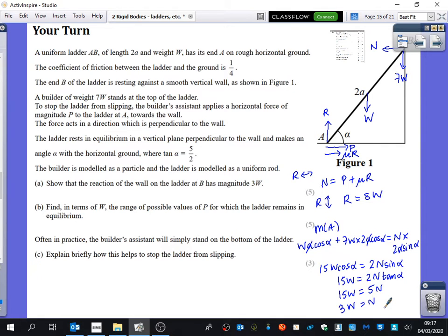So actually, for this first part that we've got here, for showing that the reaction of the wall and the ladder has a magnitude 3W, did I actually need any of these things? No, I didn't need those bits. So although we've got those written down, they're not actually going to be used for this first bit here. This first bit here is taking moments about A.